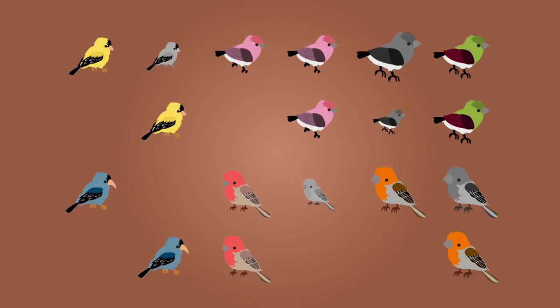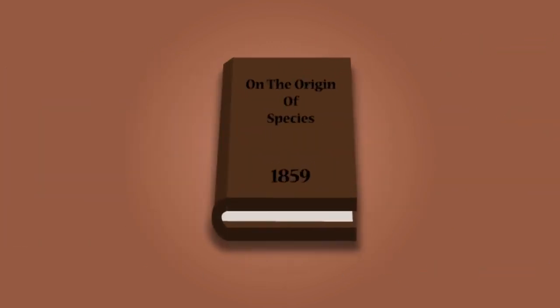Darwin called this theory natural selection, and he published it in his book On the Origin of Species in 1859.